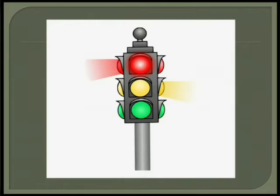Look at this picture. This is a picture of a traffic signal. This traffic signal has three different colors, and following each of these three traffic lights is an example of following traffic rules. We follow traffic rules so that traffic moves smoothly. In the same way, there are rules of social life that tell us what each person should be doing.